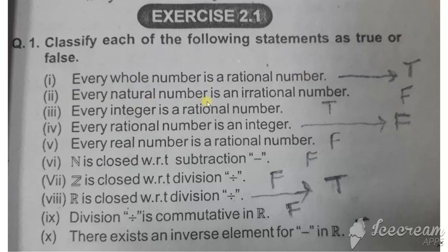Statement two: Every natural number is a rational number. Statement three: Every integer is a rational number. Every integer is a rational number - this is true.